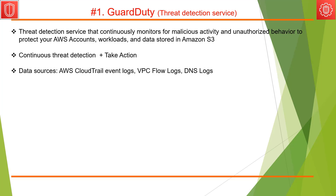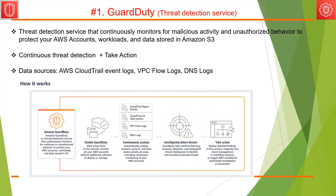The first service is GuardDuty. GuardDuty offers a threat detection service that continuously monitors for malicious activity and unauthorized behavior to protect your AWS accounts, workloads, and data stored in Amazon S3. Once you enable GuardDuty, it continuously analyzes CloudTrail logs, VPC flow logs, and DNS logs, and it intelligently detects threats.